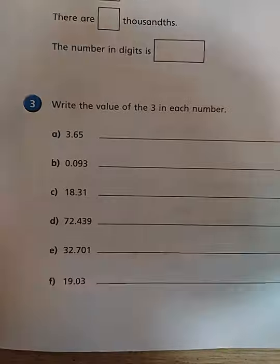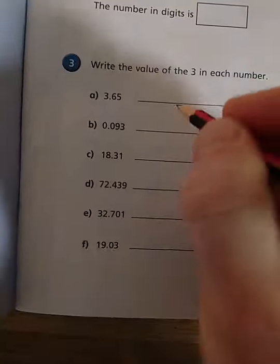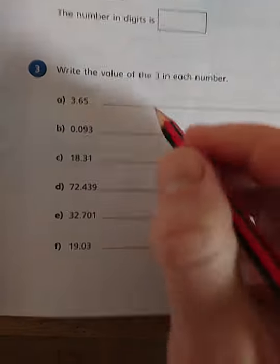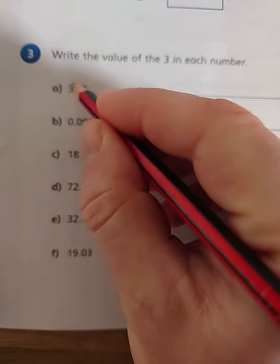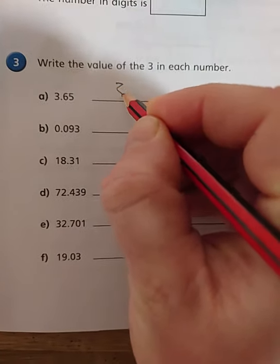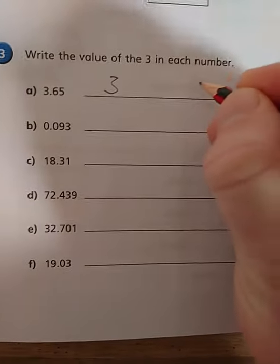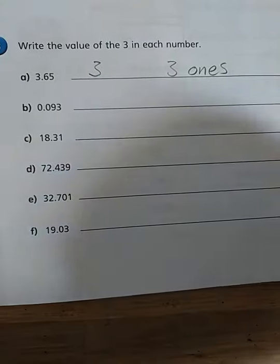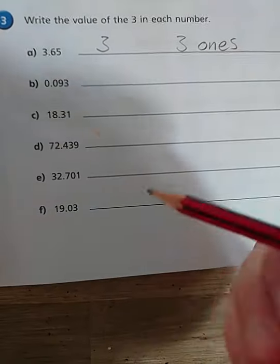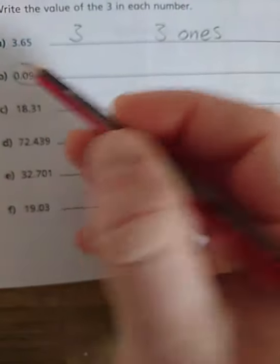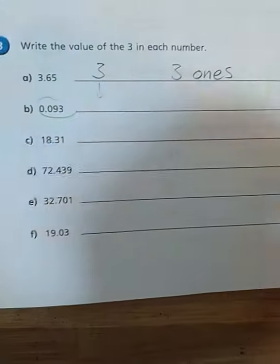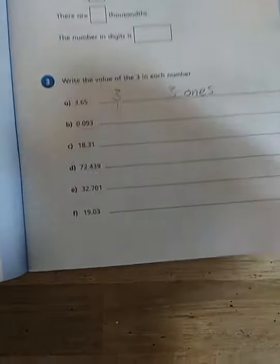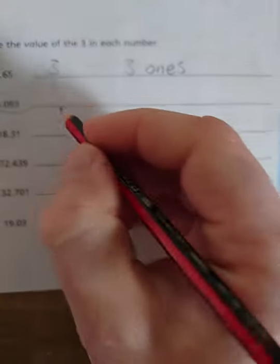Write the value of three in each. I would say you've got two ways of answering this. You could either say this first one, the value of three here, is either three. Or you could write three ones. I don't mind.